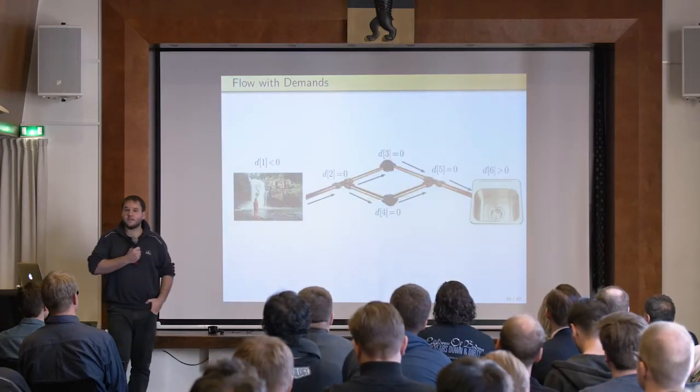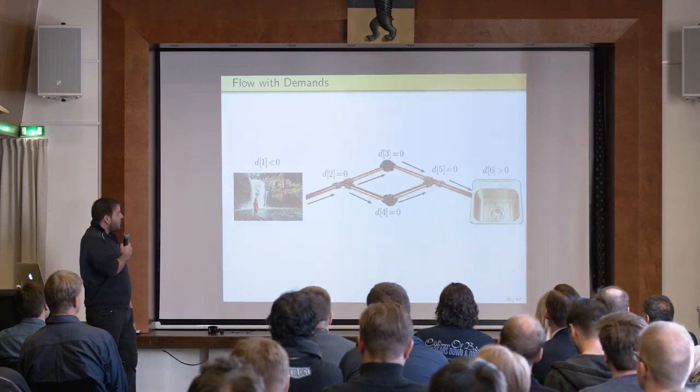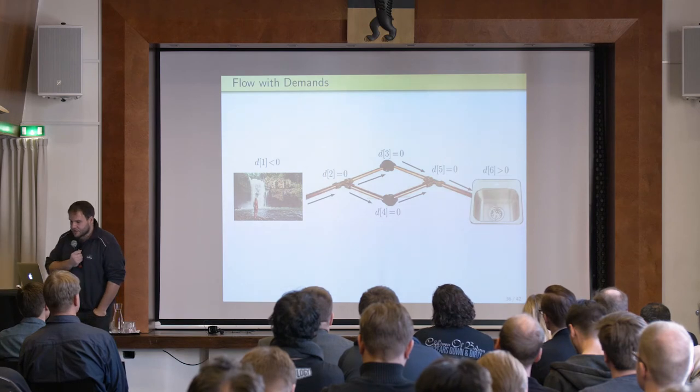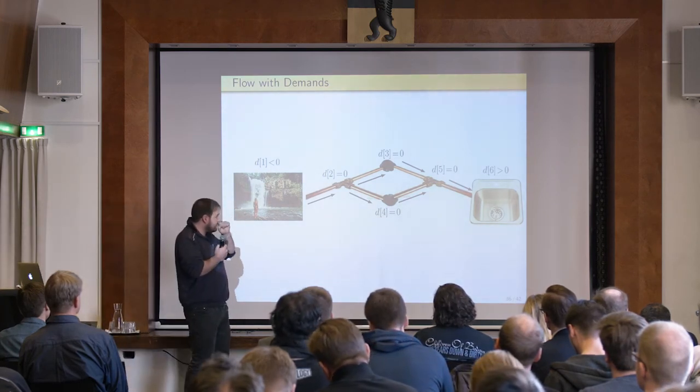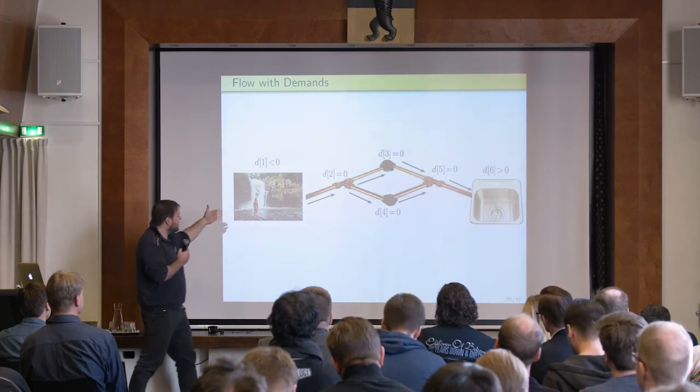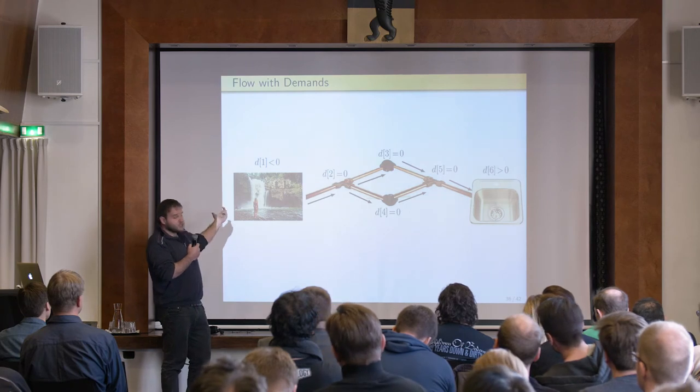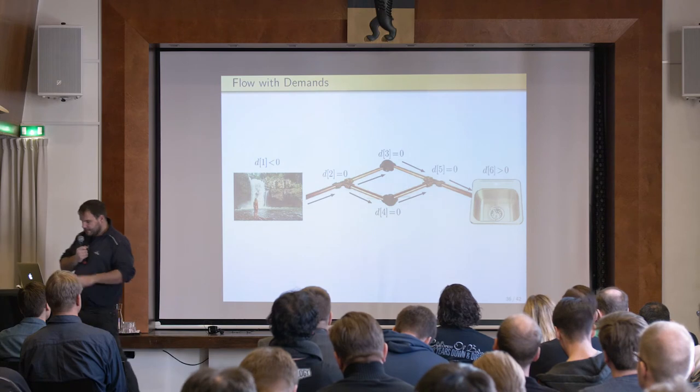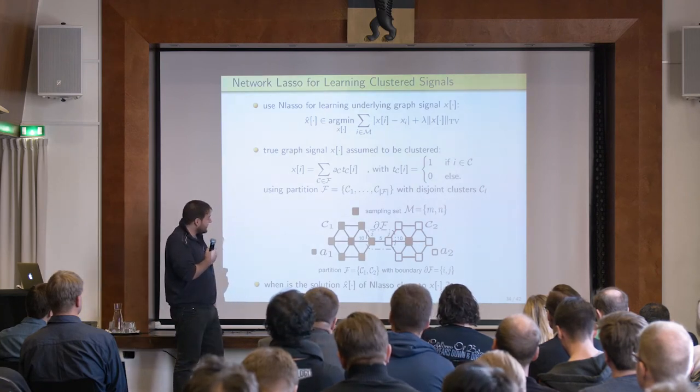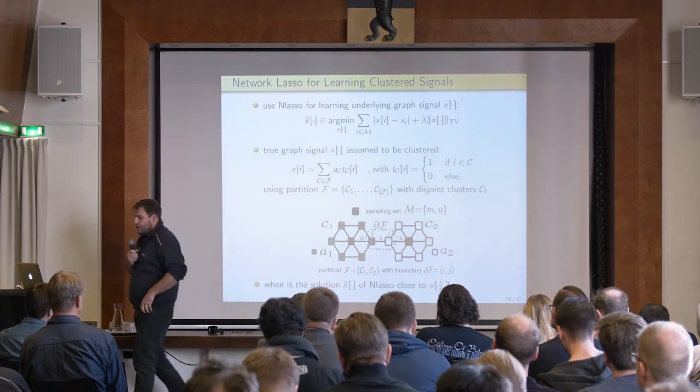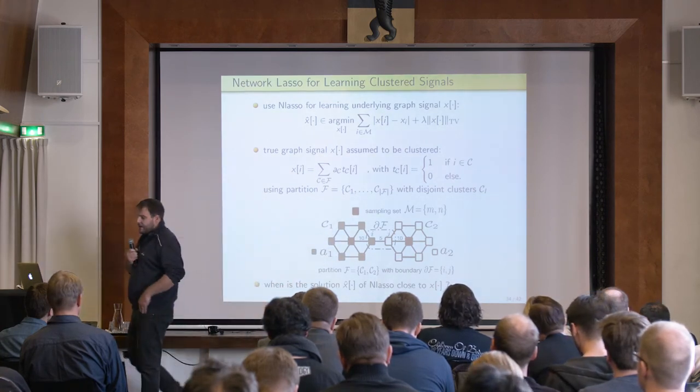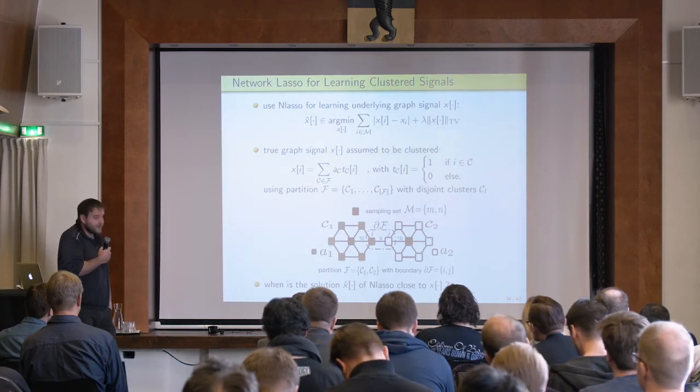So compressed sensing tells you which nodes you need to sample for a given data graph, which nodes represent the most informative data points that you should label in order that this network lasso recovers accurately the entire labeling. And we formulated this condition in terms of network flows. So a network flow is an assignment of a flow, the value of a flow, like a water flow through a pipe. Each edge in this graph or in this network has a certain amount of flow. And the flow is conserved in the interior nodes. So everything that flows into a node within the network has to come out again. And then there are some nodes which inject the flow. These are called sources. And then some nodes absorb the flow, which are called sinks.